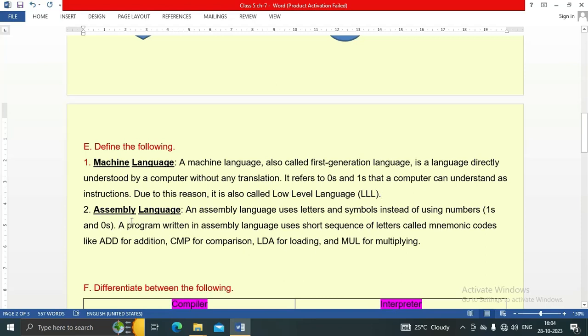Second one is assembly language. An assembly language uses letters and symbols instead of using numbers, ones and zeros. A program written in assembly language uses short sequence of letters called mnemonic codes, like ADD for addition, CMP for comparison, LDA for loading, and MUL for multiplying.